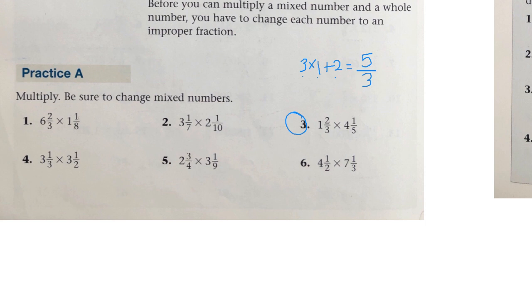Then we're going to have 4 and 1/5. So the whole number, 4 times the denominator, 5, plus the numerator, 1, will be 21. And the denominator stays the same. So now we have 5 over 3 times 21 over 5.